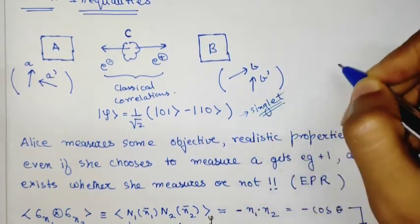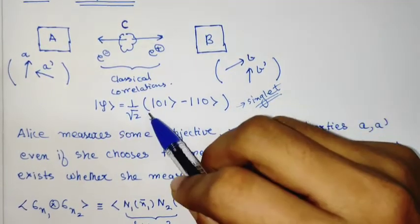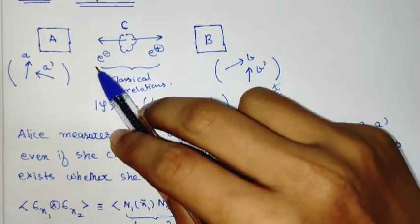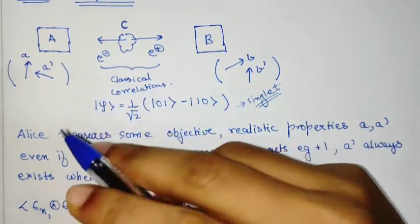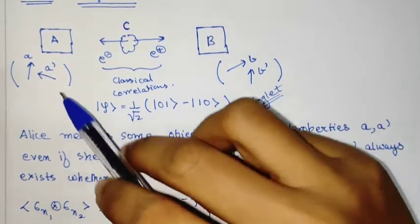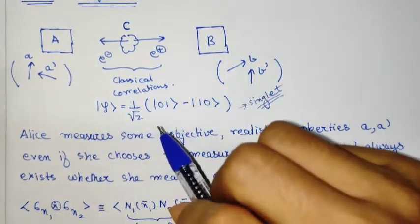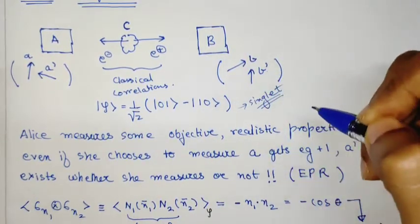Which we have been using all along. The point is, one part of the state, suppose the electron or the first bit, goes to Alice. Alice has a Stern-Gerlach apparatus oriented along two different axes A, A'. Similarly, Bob also has one along different axes B, B'.